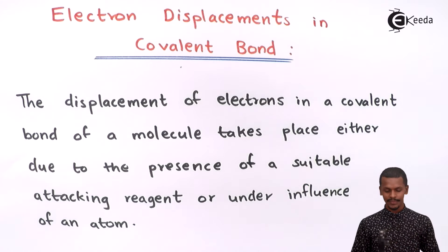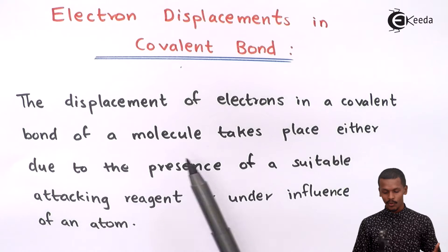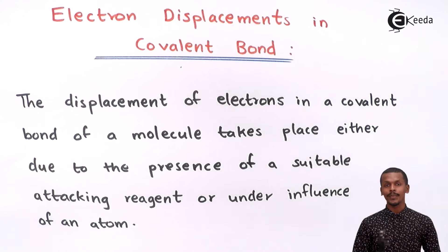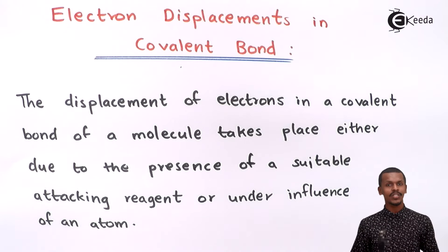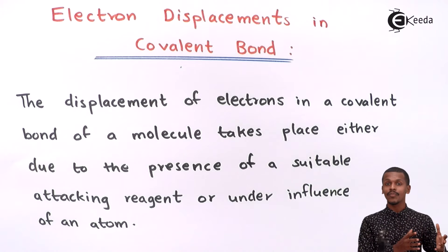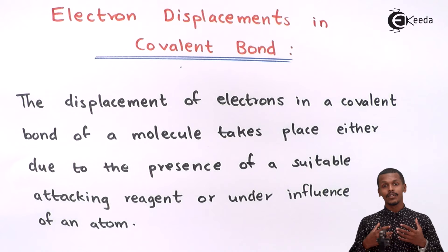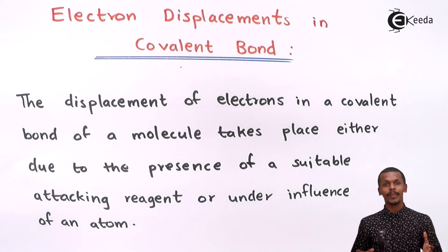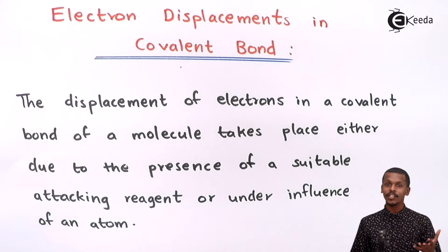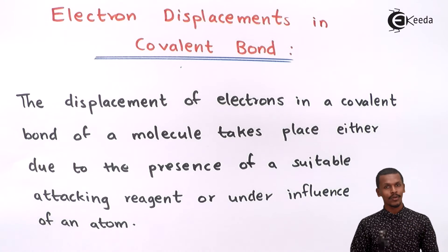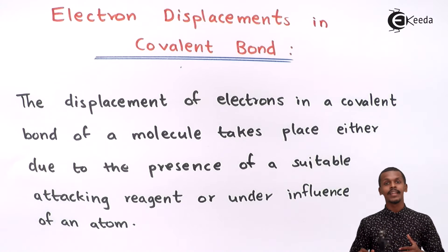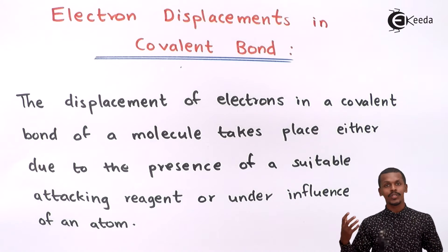The displacement of electrons in a covalent bond of a molecule takes place either due to the presence of a suitable attacking group or under the influence of an atom. If there is a presence of an atom or an attacking group, the electron would get displaced from one position to another. This leads to the creation of polarization, making that covalent compound behave like a polar covalent bond, and this displacement can give a temporary or permanent dipole to the particular molecule.